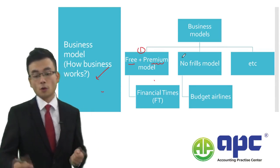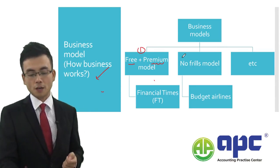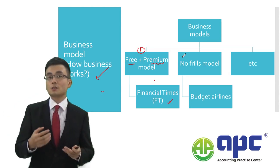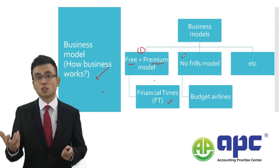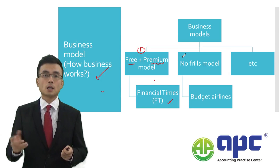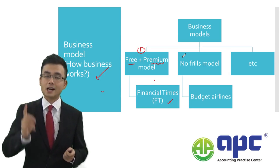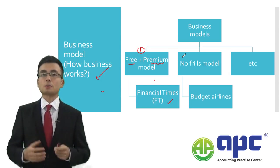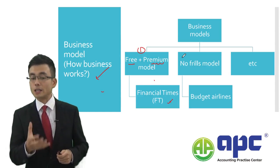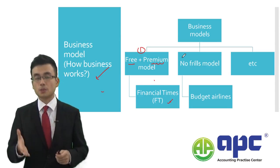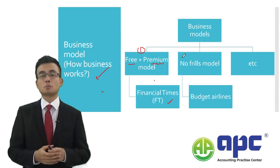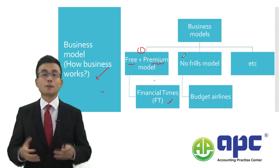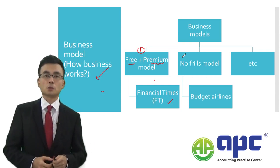Other companies — for example, Financial Times — provide high quality free-of-charge articles, but if you want to get access to the premium content you have to pay for it. So it is using the free-plus-premium business model to generate sales revenue, and that's the first type of business model.